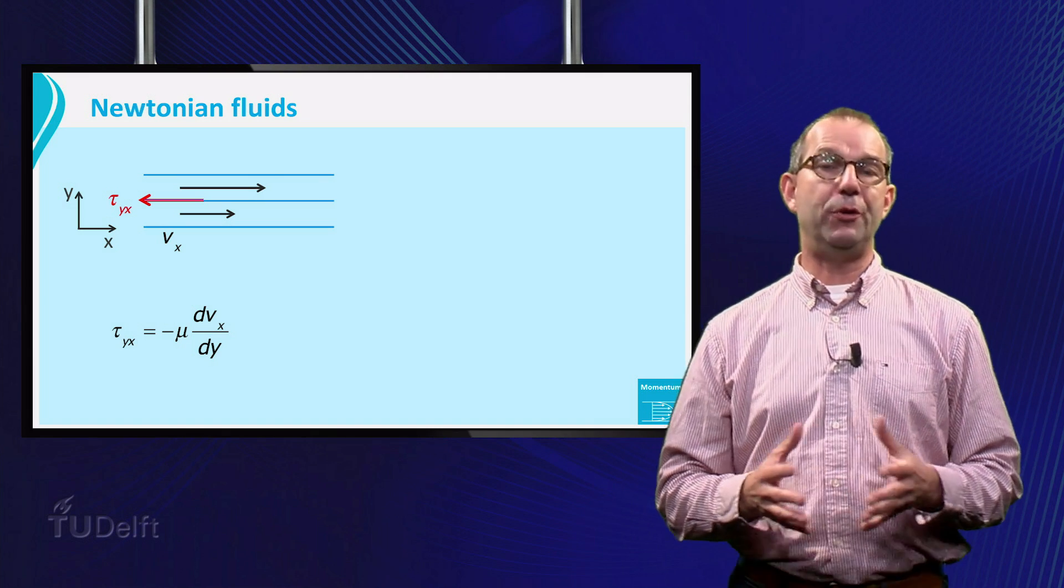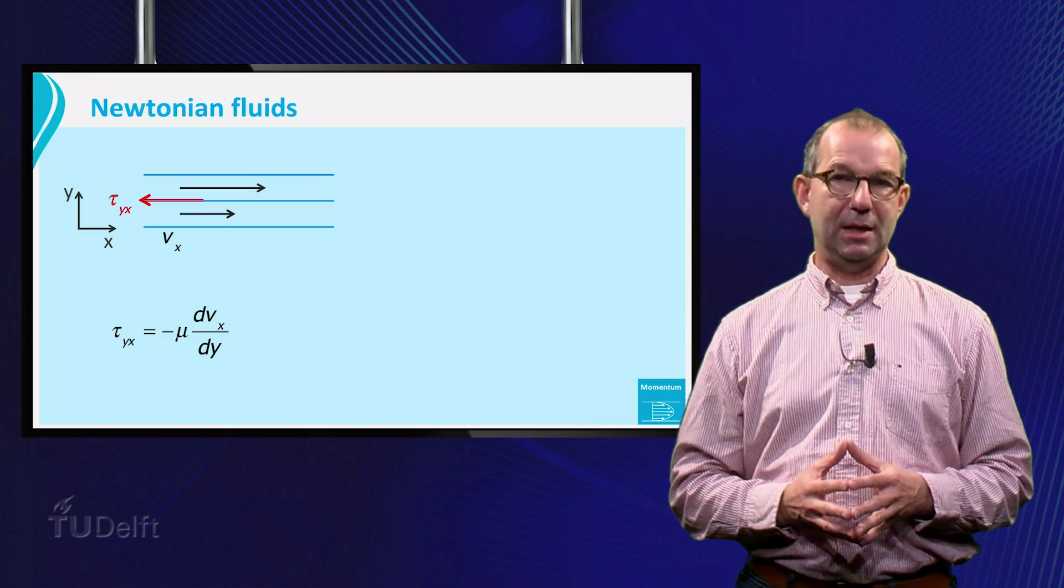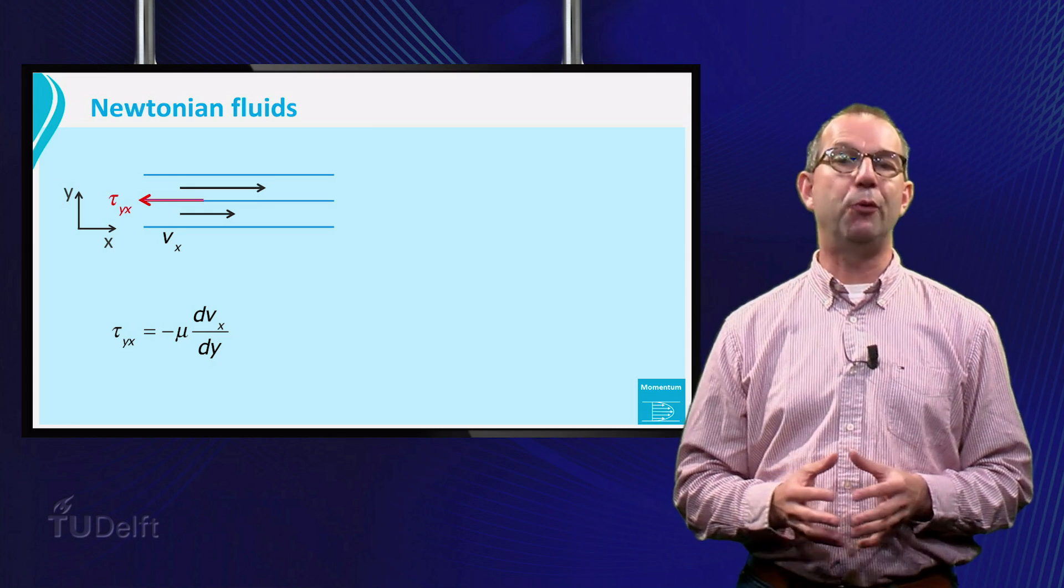The coefficient mu is a material property and it is called viscosity, as we have seen before.